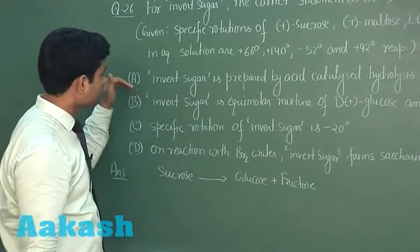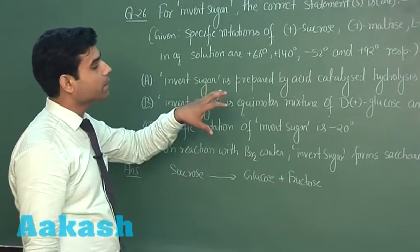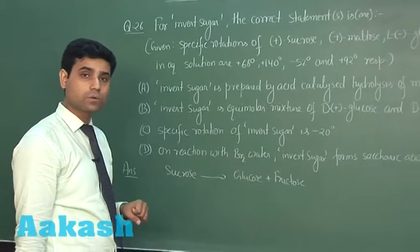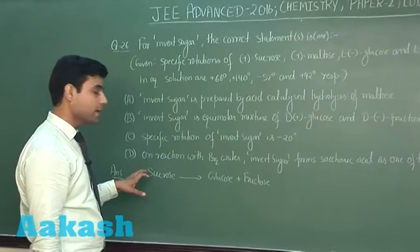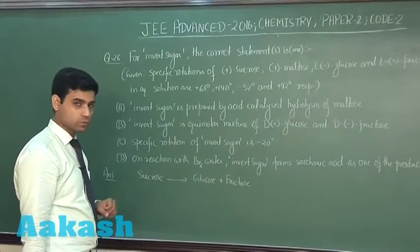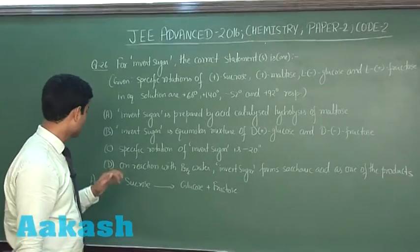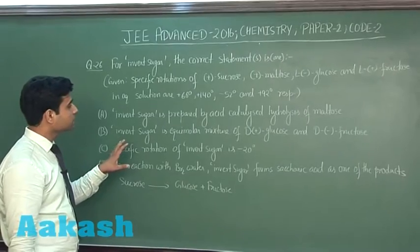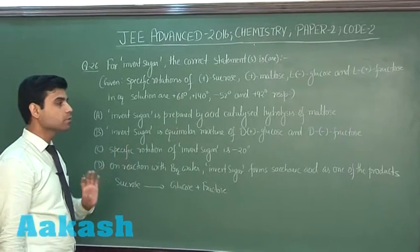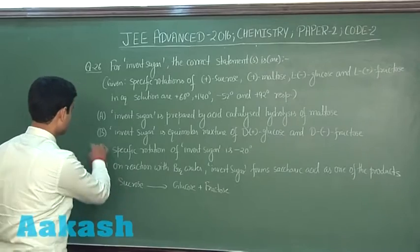Option A, which states that invert sugar is prepared by acid-catalyzed hydrolysis of maltose, is wrong — it is prepared by acid-catalyzed hydrolysis of sucrose, not maltose. Option B states that invert sugar is an equimolar mixture of D(+)-glucose and D(−)-fructose, which is the correct answer.